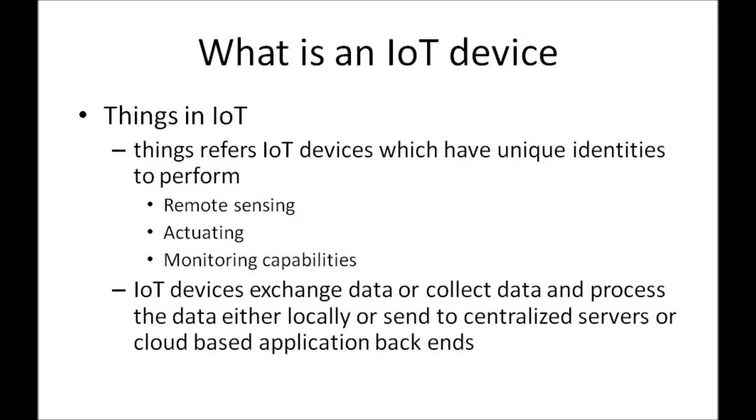The 'T' in Internet of Things stands for things. Things in IoT usually refer to any device which can be uniquely identified using some kind of addressing. Looking into the capabilities, we look for three areas: sensing — both local and remote — actuation, and monitoring. The devices basically collect information about the surrounding environment. They can exchange data for better insights, and the data collected can be either locally stored, sent to a centralized remote server, or stored on a cloud-based server where the application gains insights from the data collected.